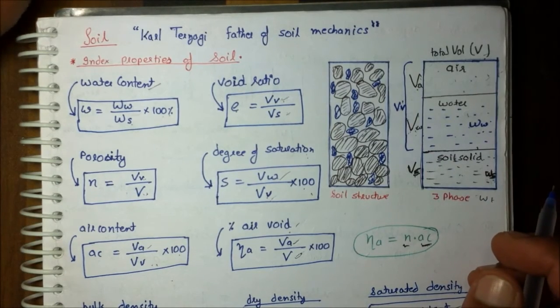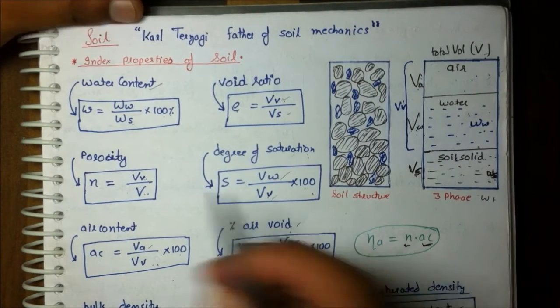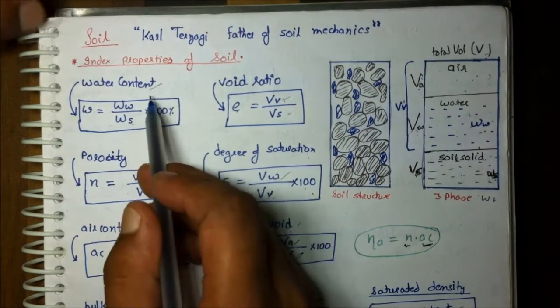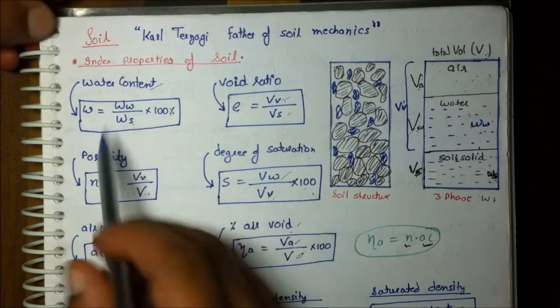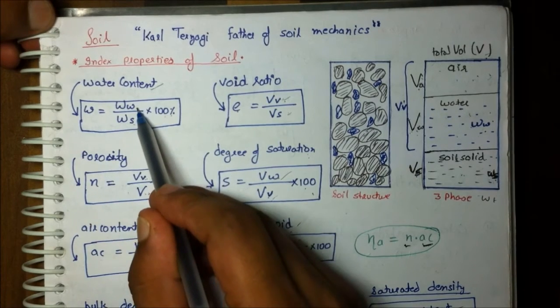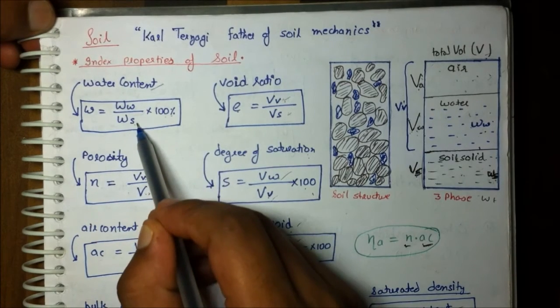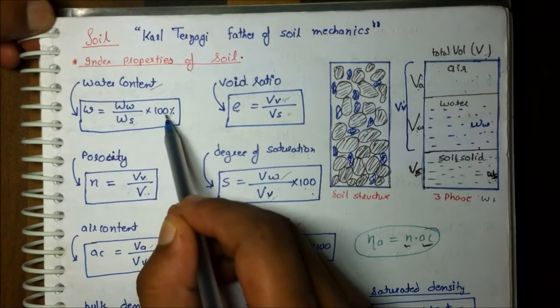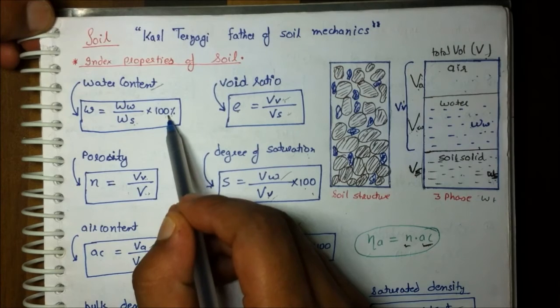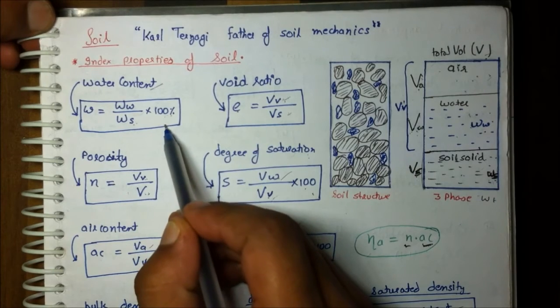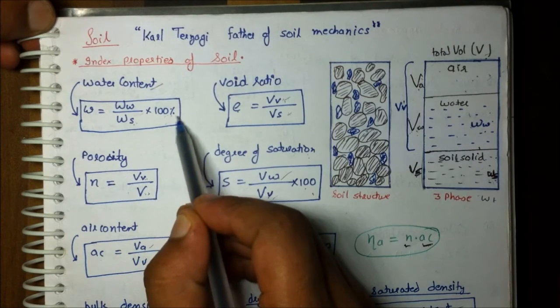Now, coming to the first index property — water content. Water content is the weight of water upon weight of solid, multiplied by 100%. It is always expressed in percentage.